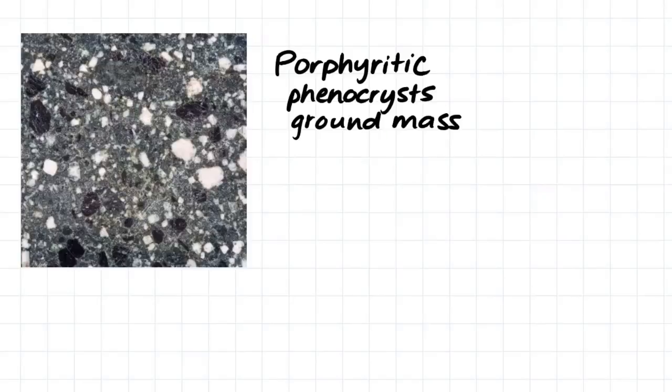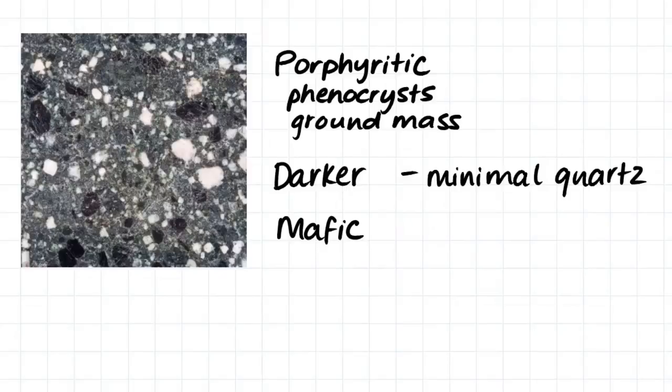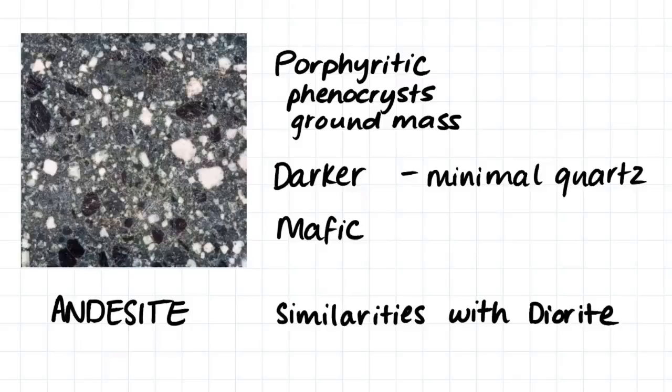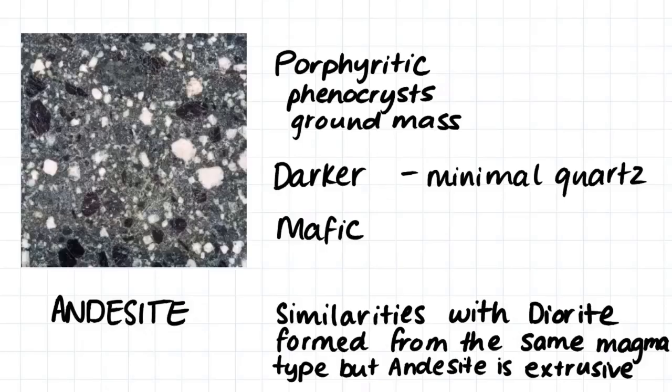This sample here is quite similar to the rhyolite as it contains phenocrysts and groundmass and is therefore porphyritic. We can see the similarities here. It is much darker and contains mineral quartz minerals and is therefore, I would say, a mafic igneous rock. This sample is andesite. You may also notice that this rock has similarities with diorite, as they are both dark mafic rocks. In fact, they both formed from the same magma type, but andesite experienced cooling on the surface of the earth and is therefore an extrusive igneous rock. Andesite is the extrusive version of diorite.